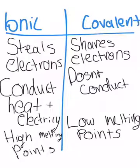Ionic versus covalent. Ionic and covalent are very different and have many differences. Ionic steals electrons like we just saw in the Lewis dot. Also, ionic conducts heat and electricity as well as has high melting points.